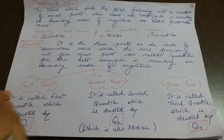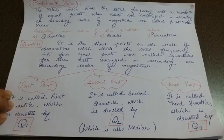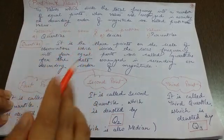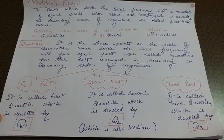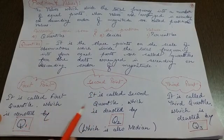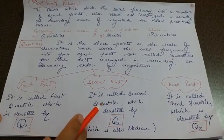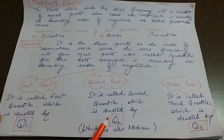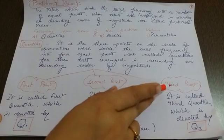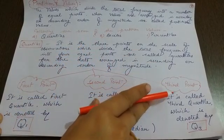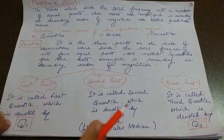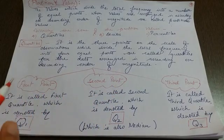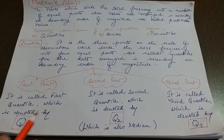When you arrange the series and divide it into four equal parts, there will be three points on the scale. The first point is termed as the first quartile, which we represent as Q1. The second point is the second quartile, represented as Q2. Q2 can be termed as the median, which I will explain when I explain the formula. The third point is represented by Q3, the third quartile. These three points are obtained on the scale of observation after dividing the frequency into four equal parts arranged in ascending or descending order of magnitude.